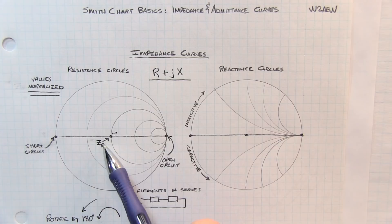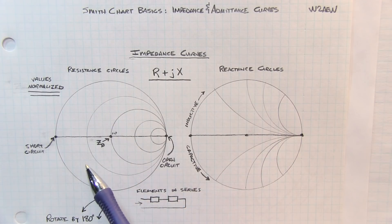In our case, we'll represent it as Z0 or the system impedance. In order to get back to actual impedance values, you would need to multiply the values obtained on the Smith chart by your particular system impedance.